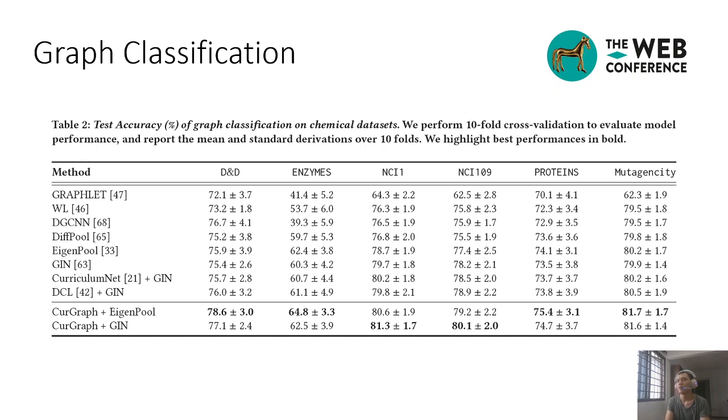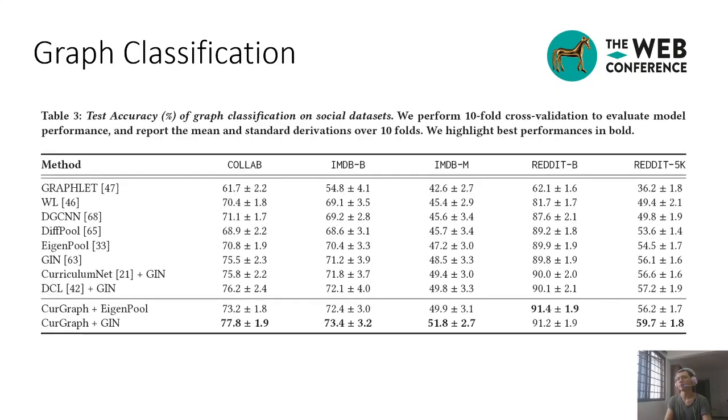We report the average and standard deviation of test accuracy on the chemical datasets in this table. We report the average and standard deviation on the social datasets in this table. As a result, CurrGraph enhances EigenPooling and GIN models to outperform all the benchmark methods.